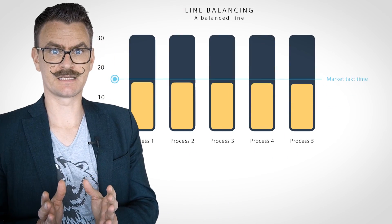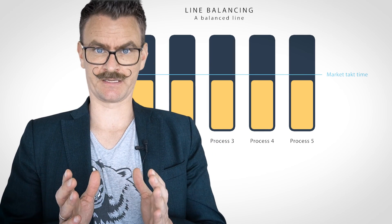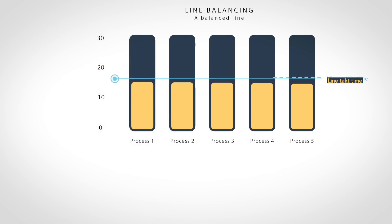Line balancing, which is an important concept to achieve flow, means leveling each process cycle time to meet the line Takt time. Bottlenecks are fascinating — they are limiting productivity everywhere. Next time you go to a restaurant, look closely for bottlenecks in the processes. Perhaps you can even spot the Takt time in some fast food restaurants. May the flow be with you.